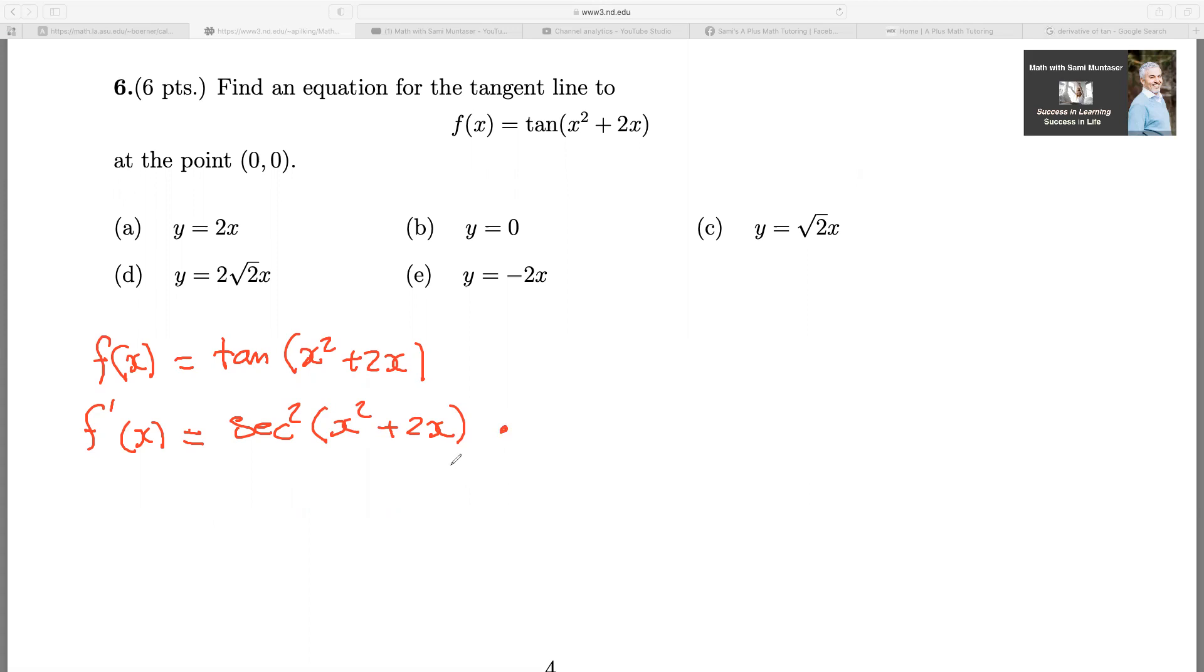After that, now you multiply by, after you did the derivative of the tan, now you have to go on the inside and start doing the derivative of this, which is going to give you the derivative of x squared is just 2x, and the derivative of 2x is just 2.